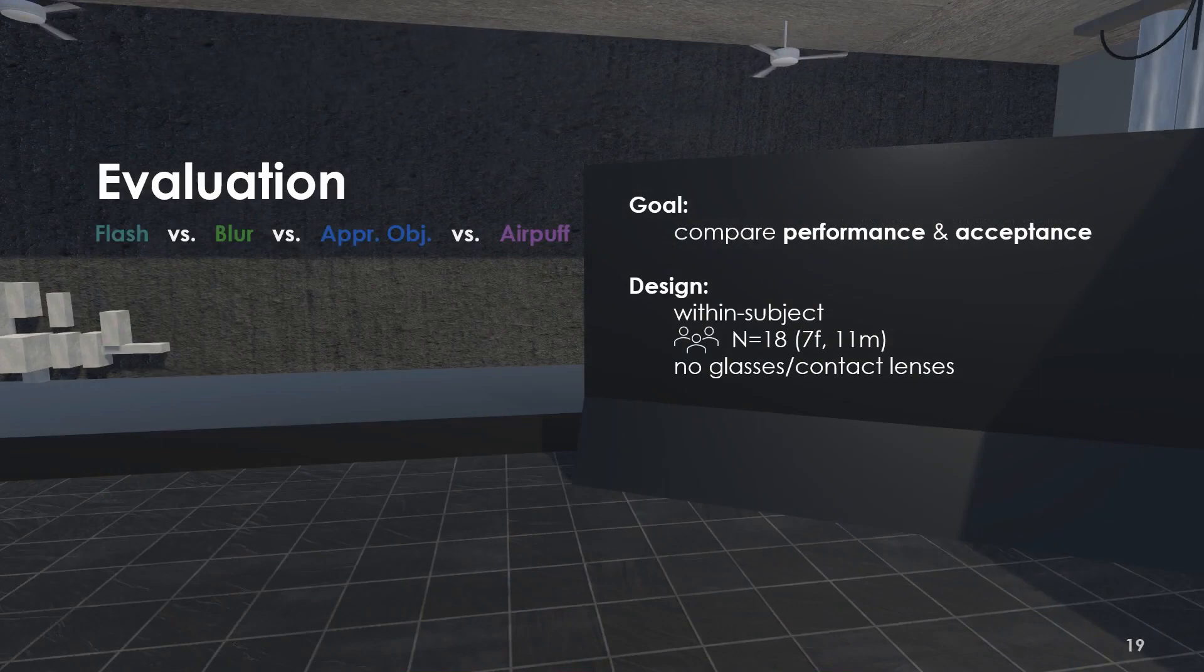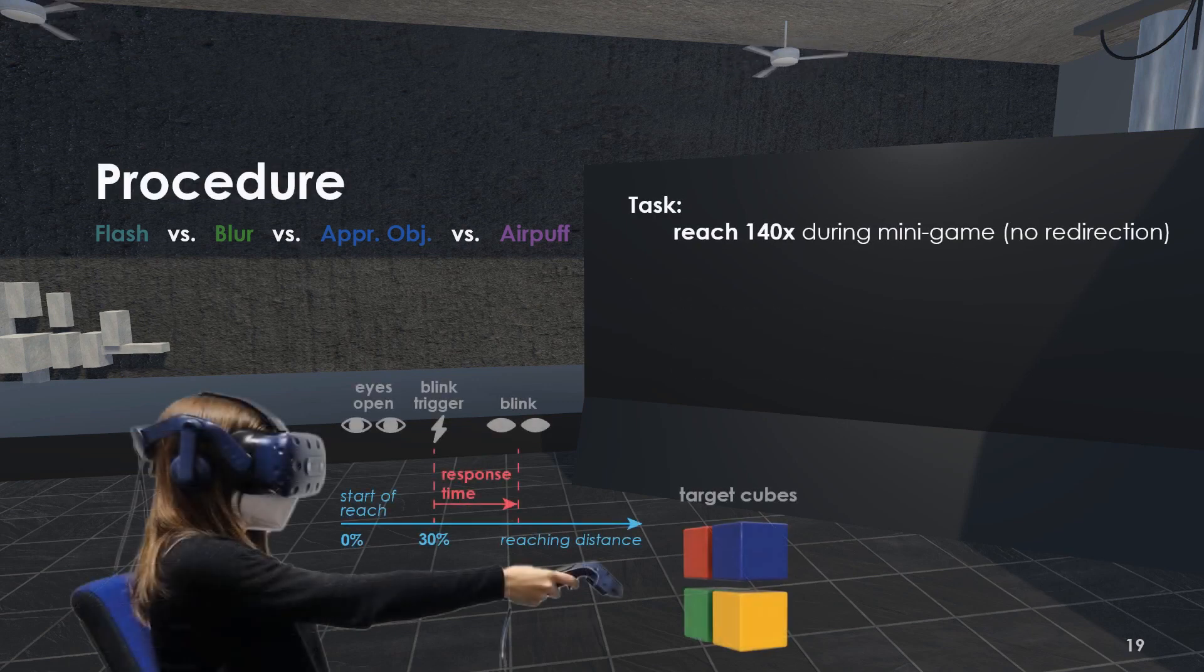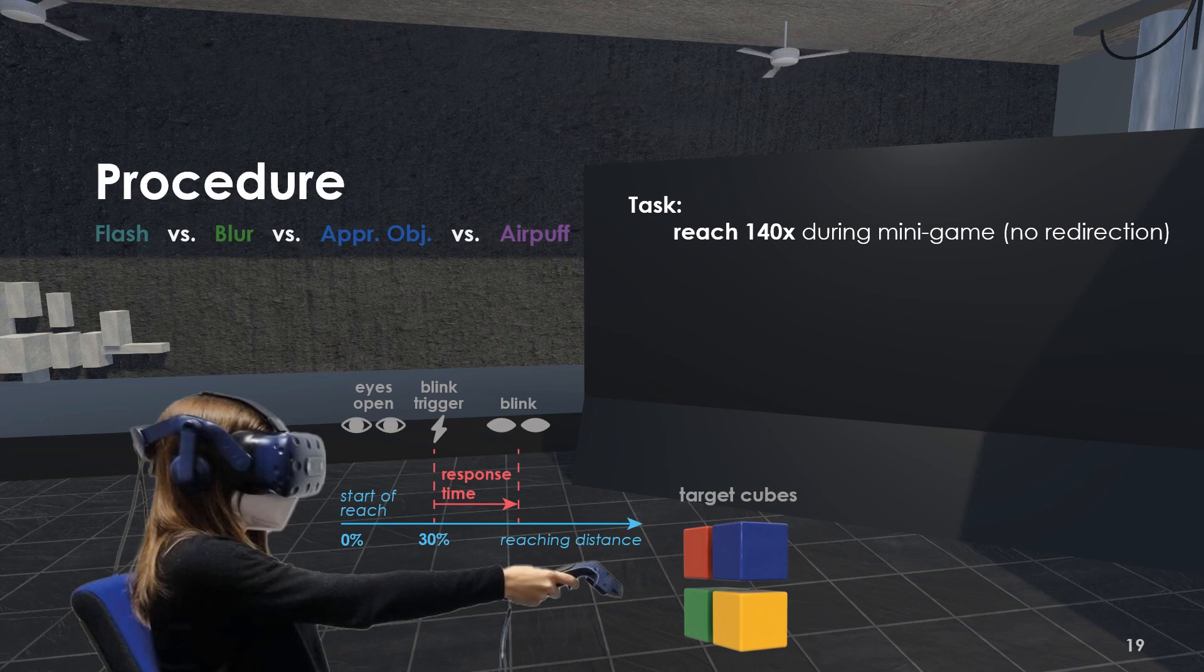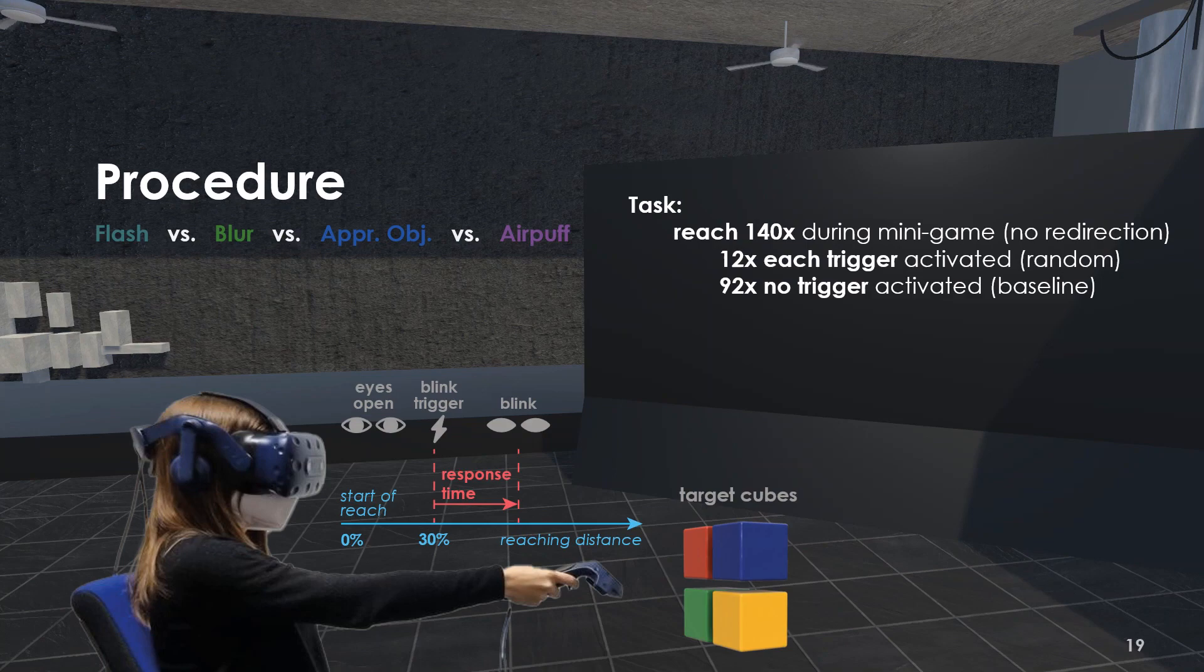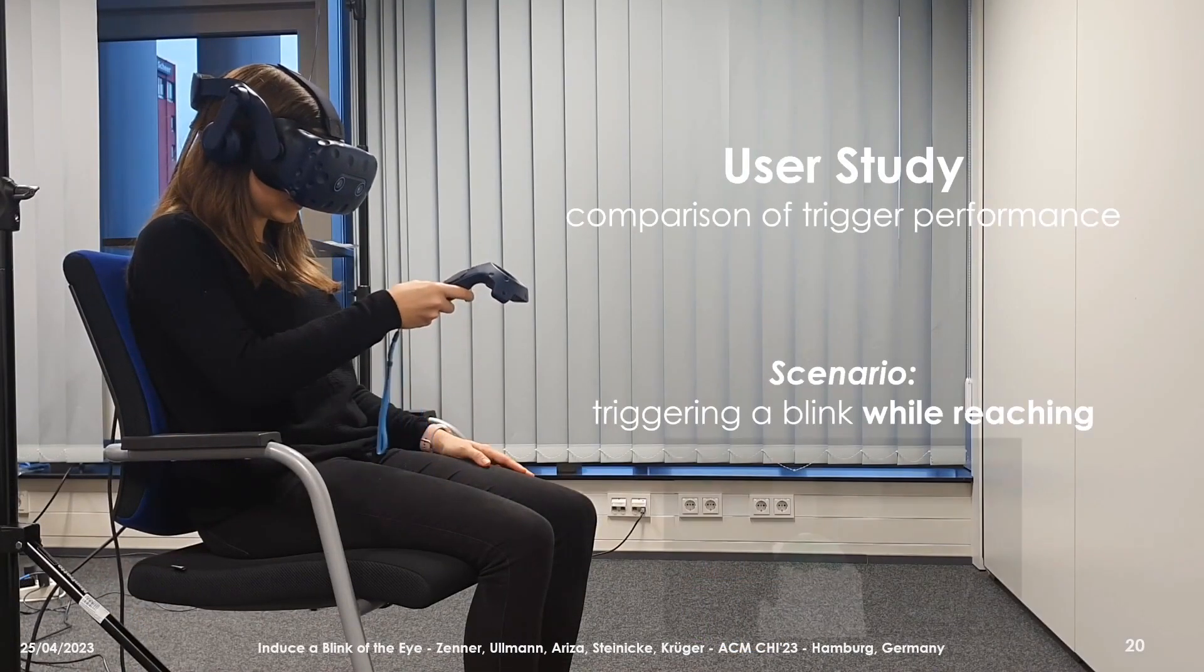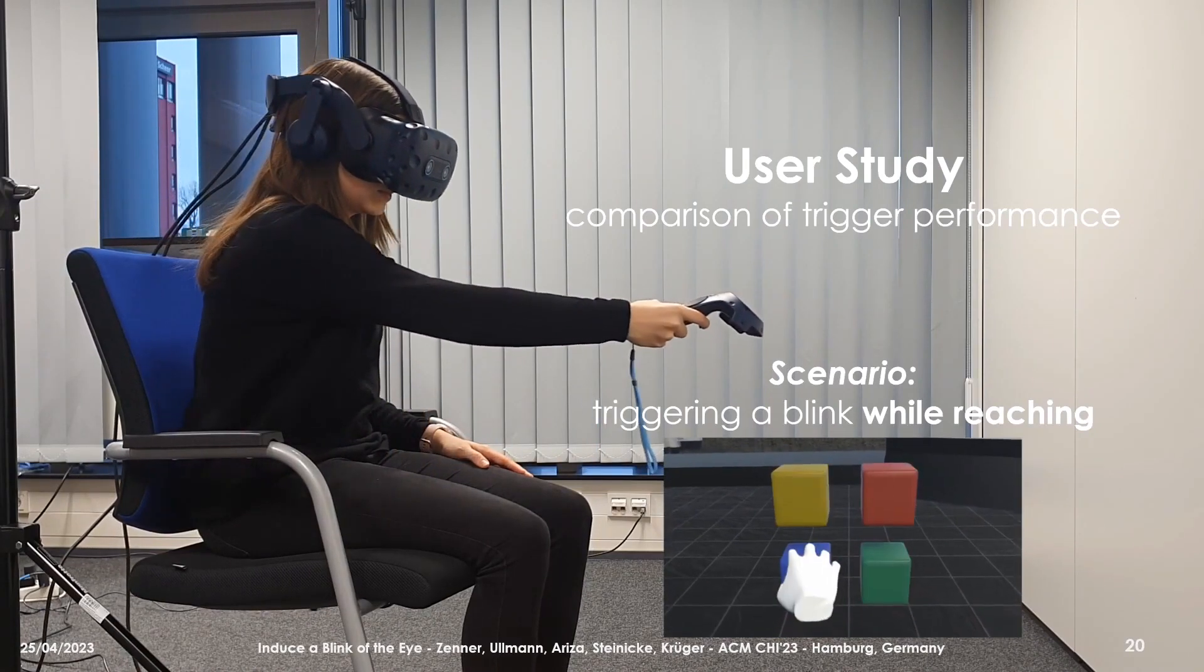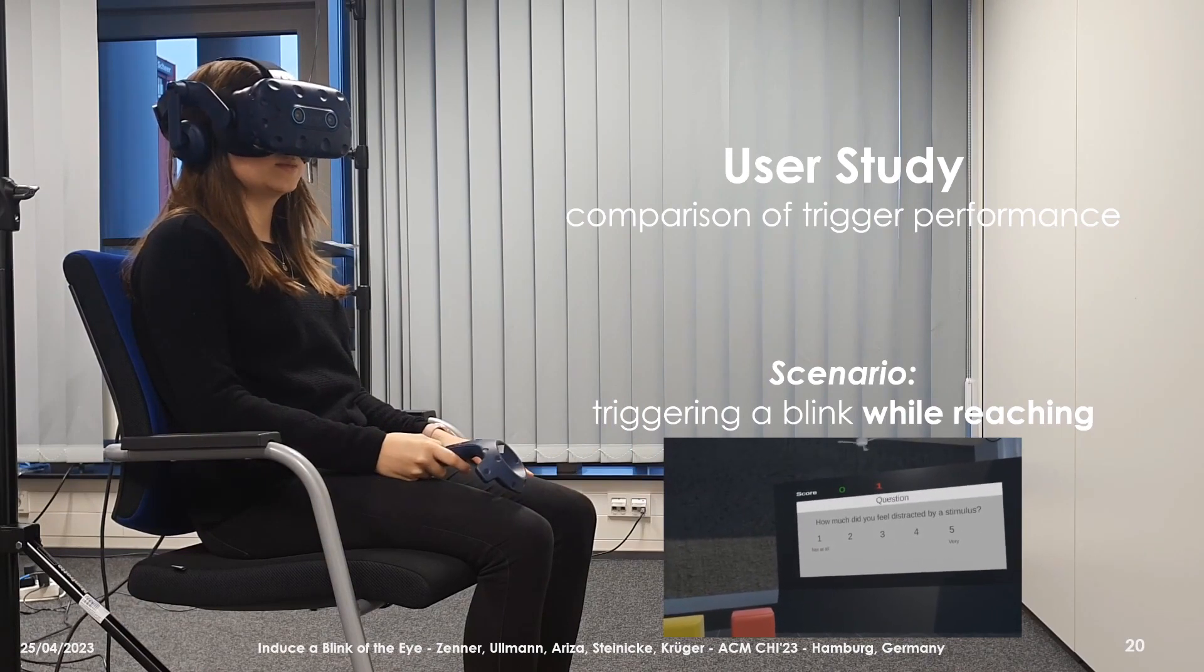We conducted a user study with 18 participants to compare our four trigger methods. In order to prevent bias, we only revealed that the experiment was studying blink triggers after the study. The task in our experiment required participants to play a simple color-remembering game, during which they had to reach forward with their hand for 140 times. Each trigger was randomly activated in 12 trials, and in the remaining 92 trials, no stimulus was presented, which served as the baseline. After each trial, participants were asked the yes-no question, did you notice any visual or physical stimulus, and rated on a five-point scale how much they felt distracted by a stimulus.